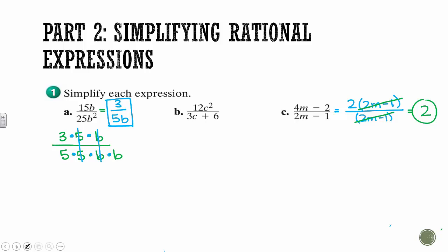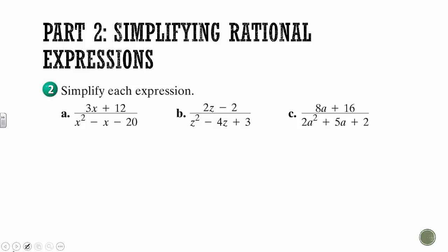So try b on your own. Now, of course, they're going to get a little harder, and what you have to remember is factoring. Break these down into things that are being multiplied together, and then you can see what crosses off. So if we take a look at A together, at the very top, always look for a GCF.